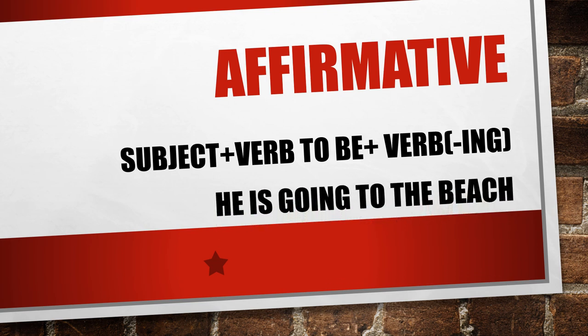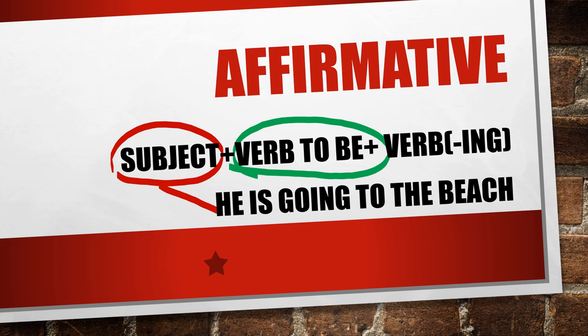We can see here an example. Subject: he. Verb to be: is. And verb ending in -ing: going. He is going to the beach.